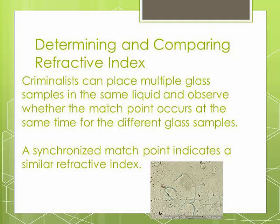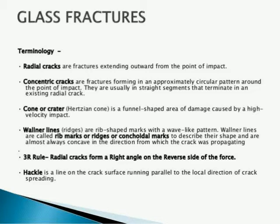Glass can be found in various types of crime scenes, like hit and run cases whenever vehicles collide with each other, or even in cases of burglary or theft and many more. Whenever a piece of glass is found at a crime scene, we have to see whether it will match with another piece. There is a term called mechanical fit, which means it may be possible to individualize a piece of glass to a particular object. For example, if two pieces of glass can physically fit with each other, it means they belong to the same object.